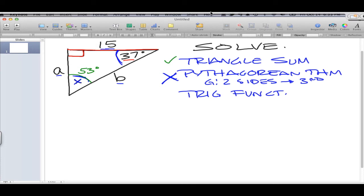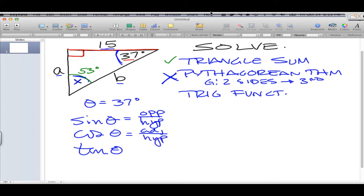Now, 37 degrees, that's going to be the theta. And it's going to be the theta in whether it's sine, cosine, or tangent. Now, sine is the length of the opposite side over the hypotenuse. The cosine is equal to the length of the adjacent side over the hypotenuse. And tangent is the length of the opposite side over the adjacent side.